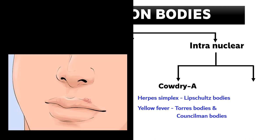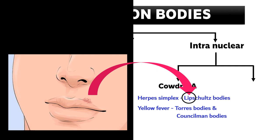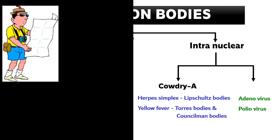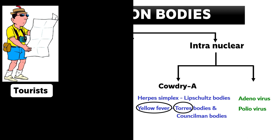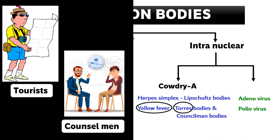For Cowdry type A inclusion bodies: in herpes simplex virus type 1 — herpes labialis — the lesions are seen on the lips. With that you can remember that in herpes simplex we have Lipschutz bodies; the word lips itself tells you this. For yellow fever with Torres bodies and councilman bodies, use this visual clue: tourists can give you yellow fever, and the tourist is shown in a yellow T-shirt to connect with Torres bodies. Also, we need to counsel the men to take the yellow fever vaccine — so you remember councilman bodies.